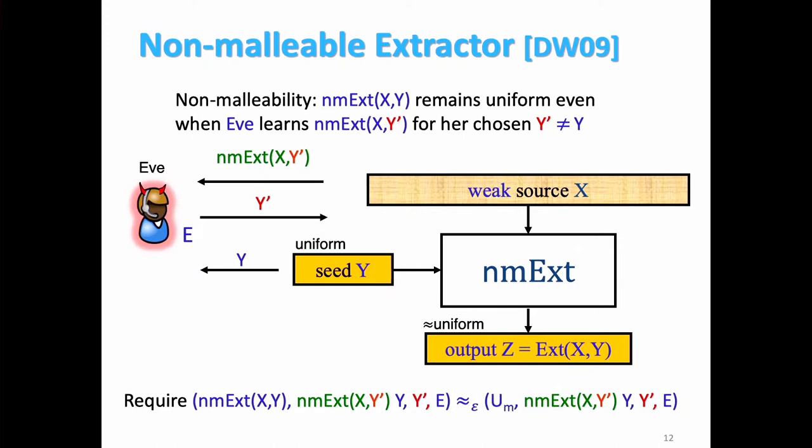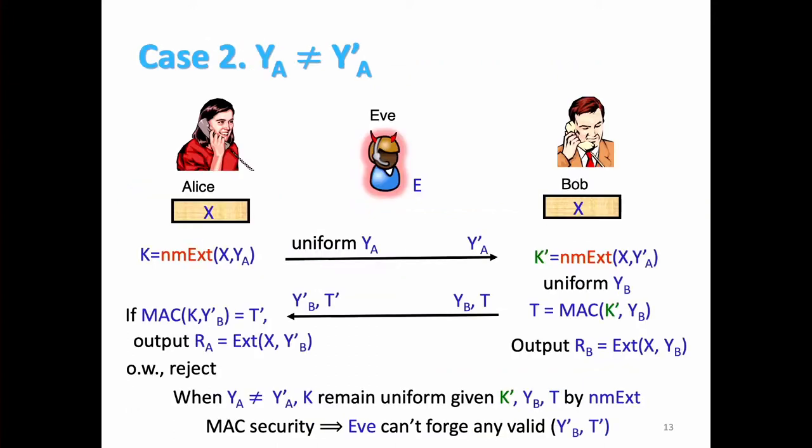So non-malleable extractor is very similar to extractor, except that the adversary also knows the extractor output to some different seed Y'. So Y' is a seed that Eve can choose. So instead of just conditioned on Y and E, extracted output is uniform, you also need to condition on Y' and extracted output of Y'. Now, now that we know this is a non-malleable here, so K' will be uniform with respect to K. So K' and K are kind of independent, so this is nice. They can work in this way.